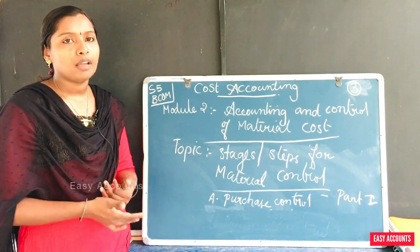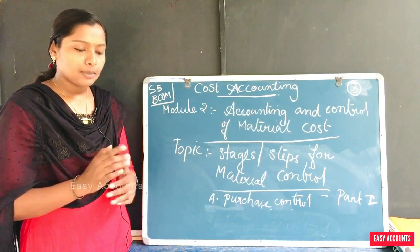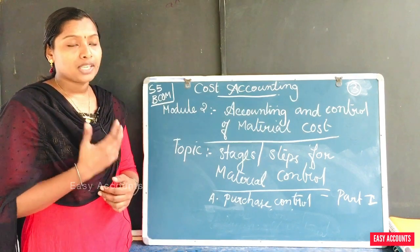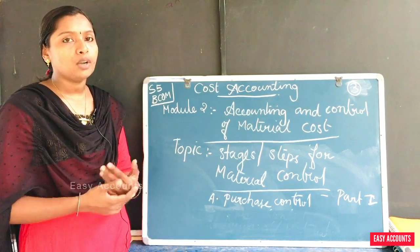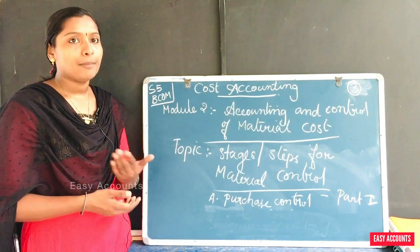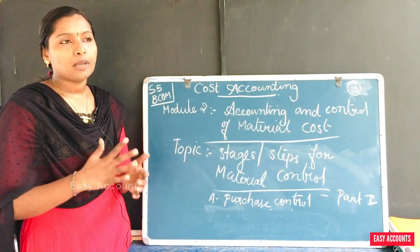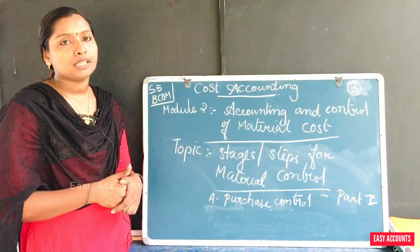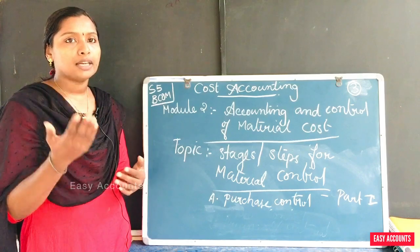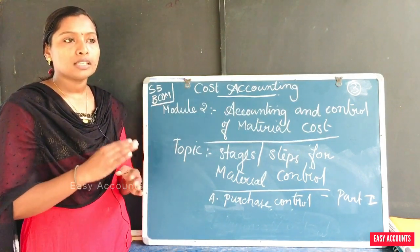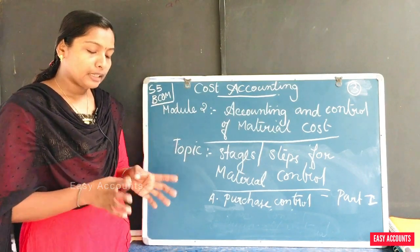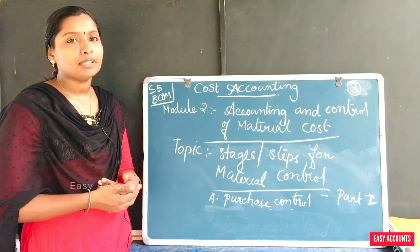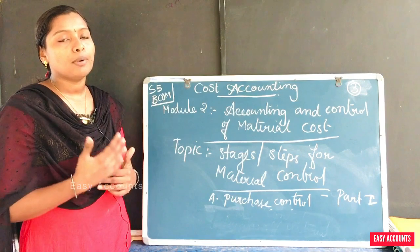This involves purchasing the right quality of materials to create products, using the right quantity, and ensuring materials are available at the right time to support uninterrupted production. This allows us to control materials cost.